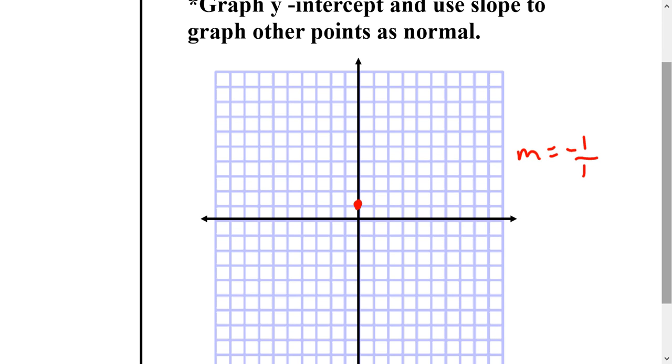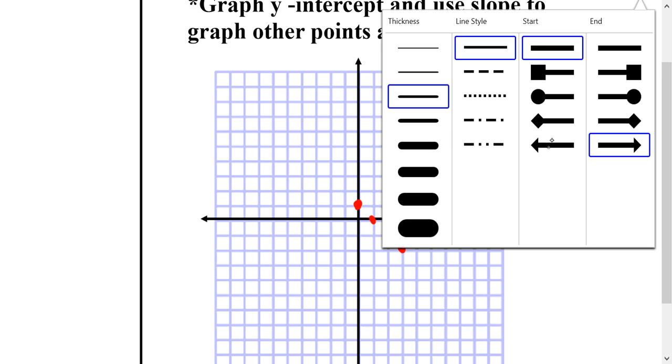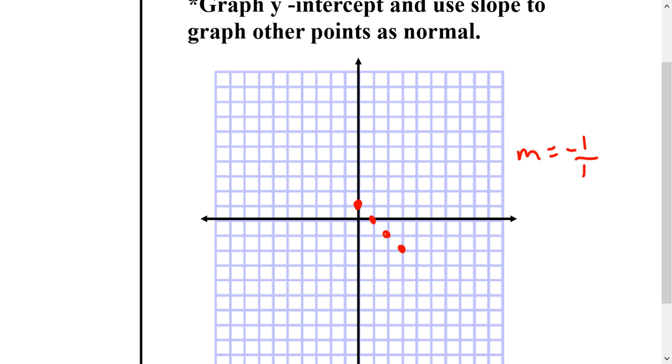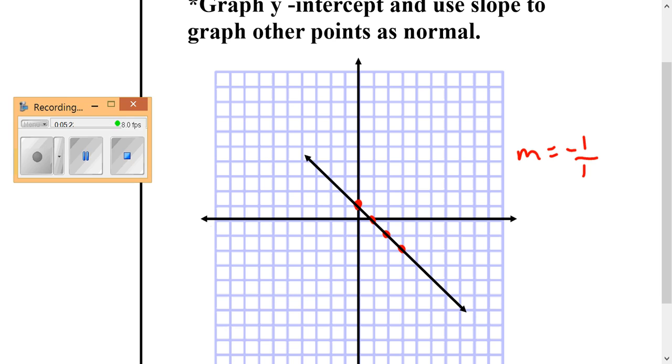So if I'm doing rise over run, that means I'm going down 1, right 1, down 1, right 1, down 1, right 1. And then I'm going to draw a nice little line to show my graph. And I'm going to make sure that I have arrows on the ends of my lines to show that it goes on forever in both directions. All right, make sure you go back and answer your essential question and write your summary.